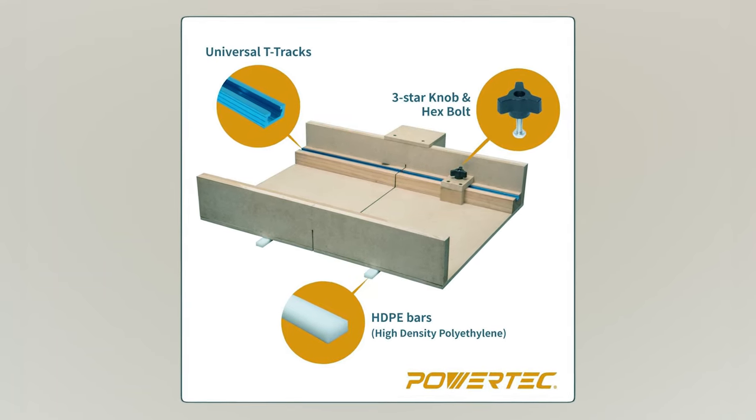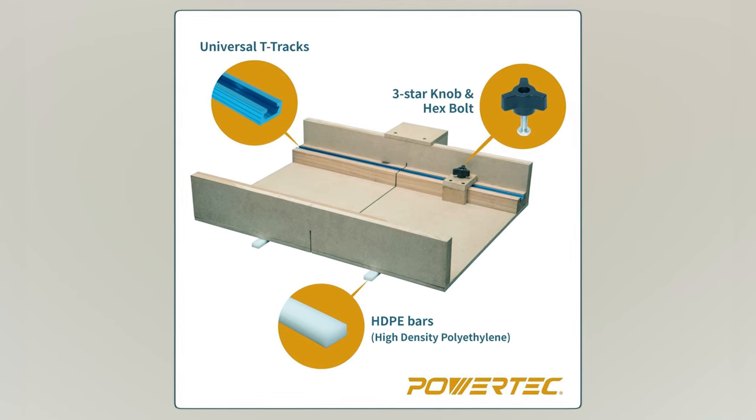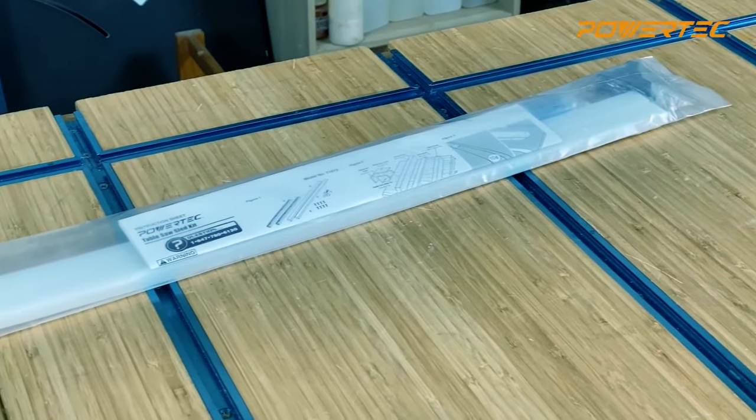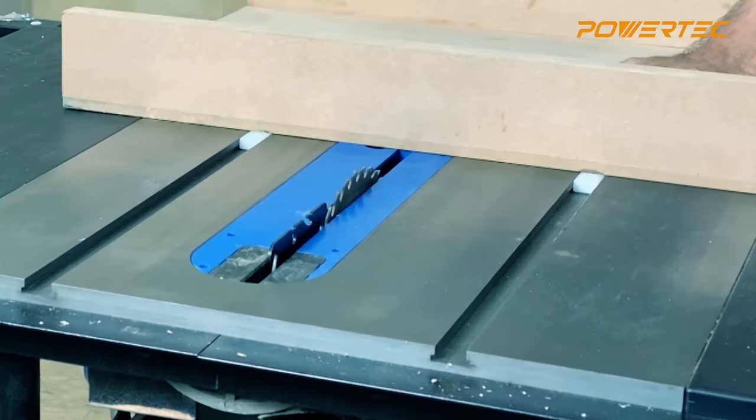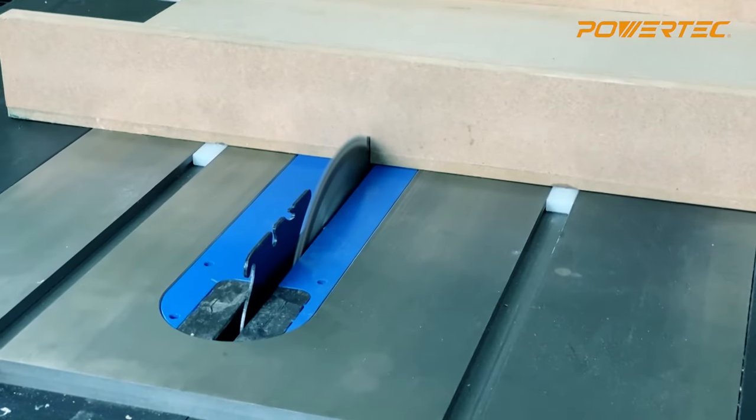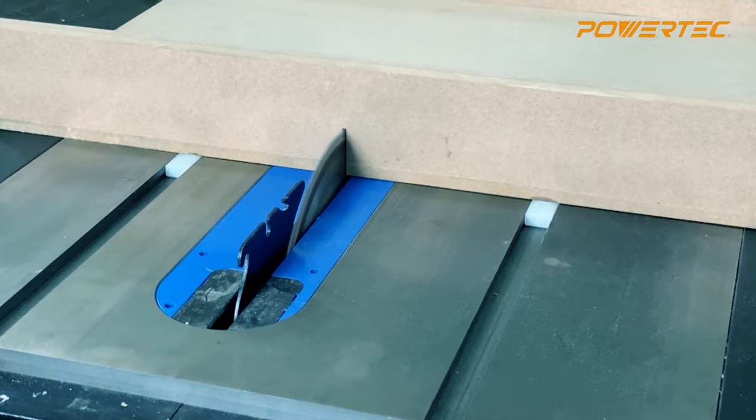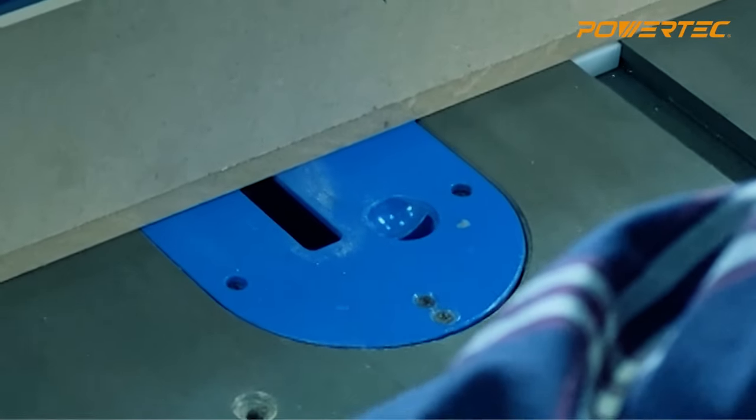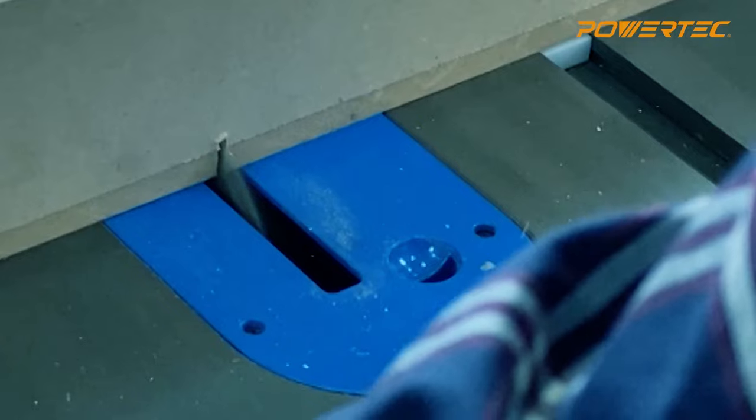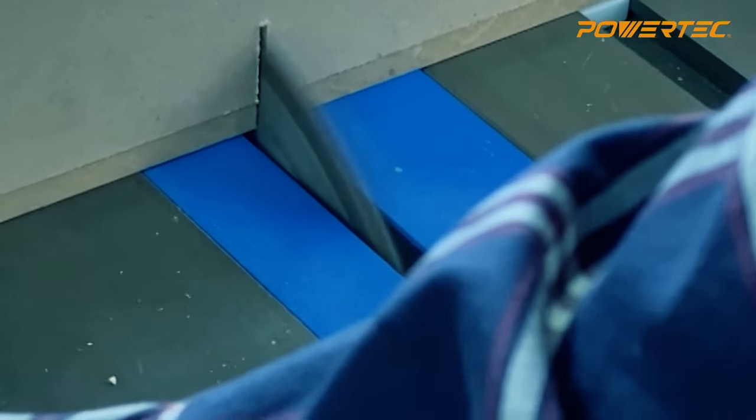HDPE miter bars, a star knob, a hex head bolt, and wood screws, ensuring a smooth sled building process. Crafted from solid extruded aluminum, the T-tracks guarantee durability, while the HDPE bars provide stability. Make your woodworking projects more accurate and safer with this handy accessory.